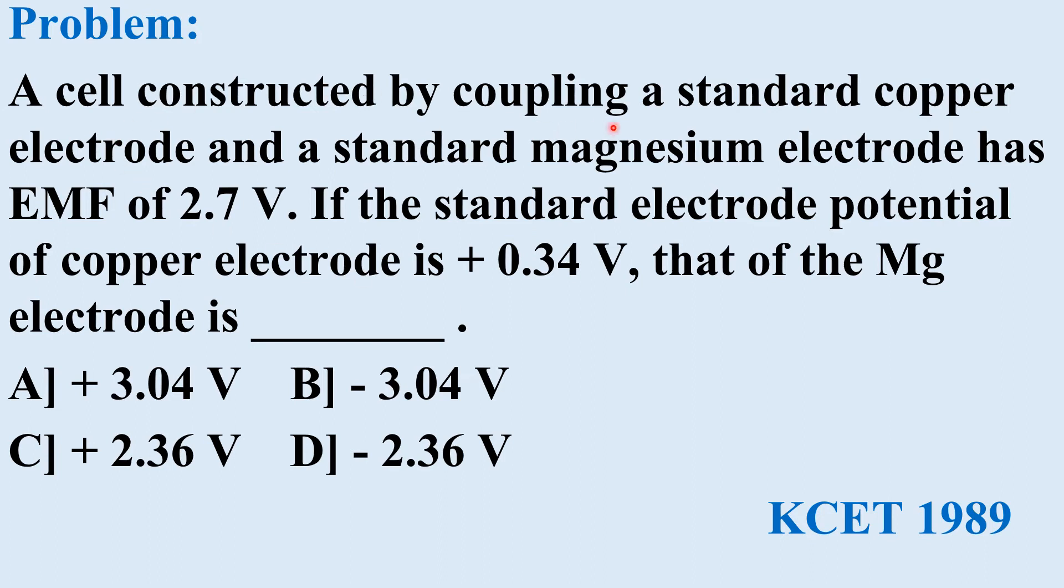A cell constructed by coupling a standard copper electrode and a standard magnesium electrode has EMF of 2.7V. If the standard electrode potential of copper electrode is plus 0.34V, that of magnesium electrode is dash.